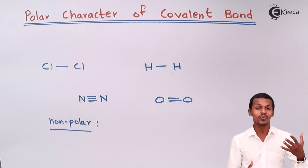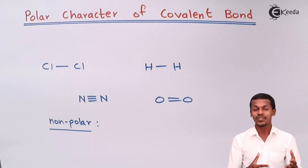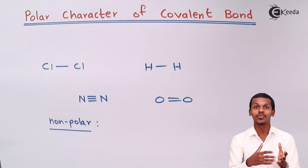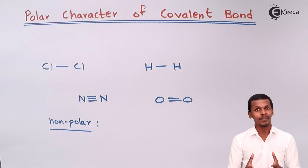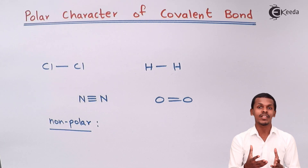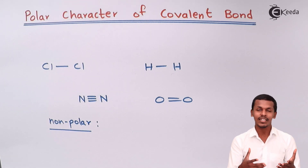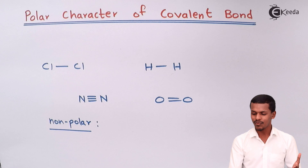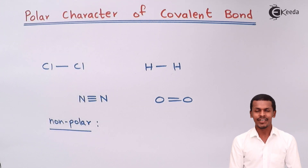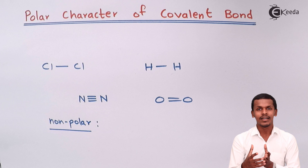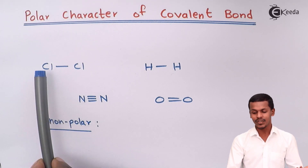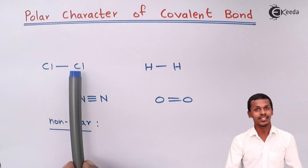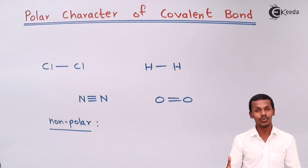Non-polar, as the name itself indicates — polar means we can find a difference between a positive charge and a negative charge, like a south pole and a north pole which are of opposite charges in magnetism. Non-polar means there is no difference between positive and negative; both are the same. So there is no electronegativity difference, and we cannot call one positive or one negative.